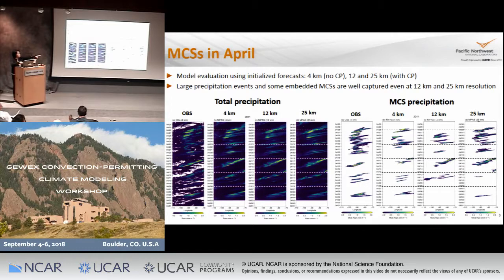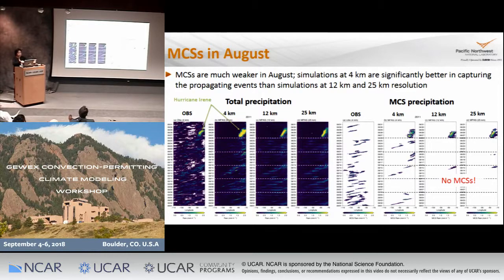Looking at April (spring season), we see quite a lot of different MCSs forming and propagating, and the four-kilometer simulation performs somewhat better than the other two. Even at 12 and 25 kilometers, the model is able to simulate MCSs in springtime. But looking at summertime, MCS precipitation is quite a bit weaker compared to springtime, and the four-kilometer resolution is doing quite a bit better than the other two — although even at four kilometers the model is not doing that great, partly associated with the microphysics scheme used from the global climate model.